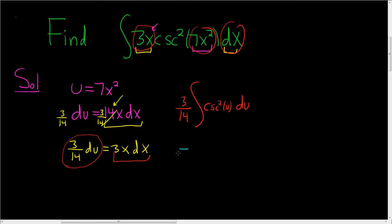To finish, we just have to think: what's a function whose derivative is cosecant squared? Well, the derivative of cotangent is negative cosecant squared, so we need a negative cotangent. I'm going to put the negative here: negative 3 over 14 cotangent of u plus our arbitrary constant c.